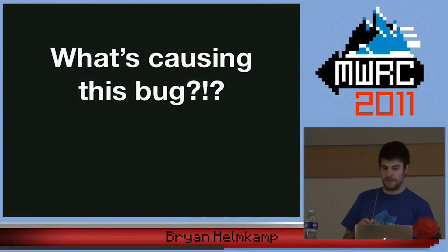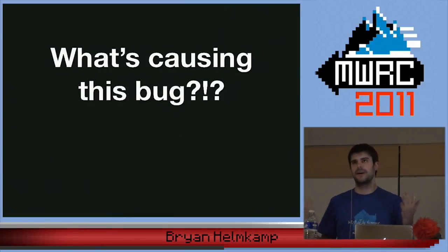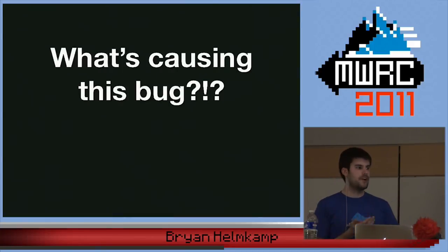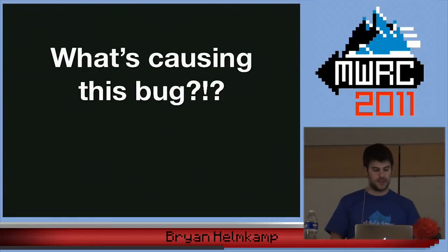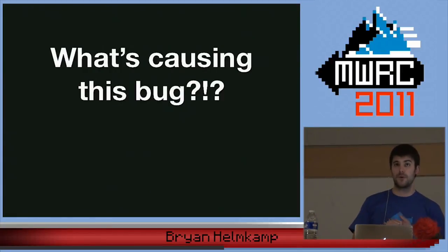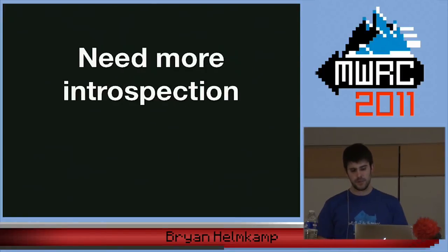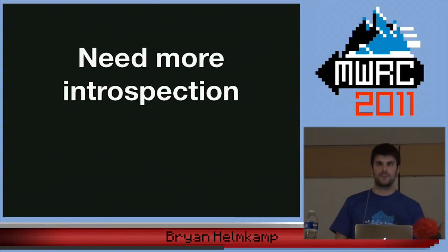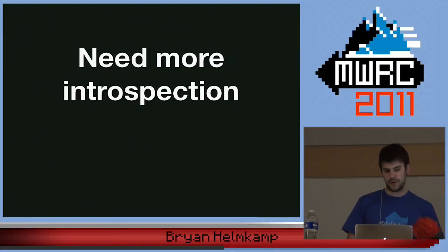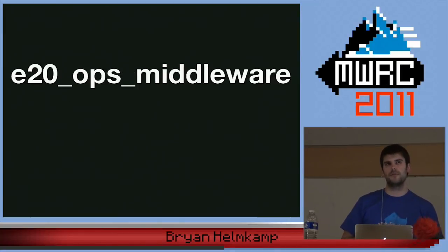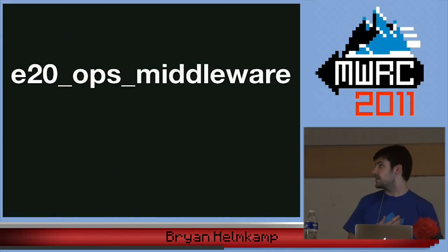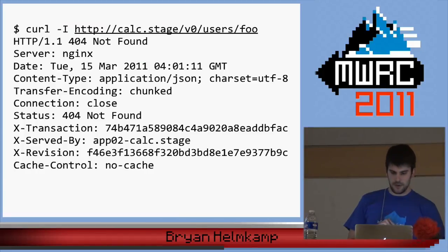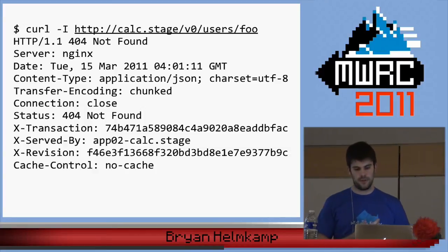The next problem: we've got a bug — something on screen isn't showing the right number. There are a lot of different places that issue could be coming from: different data stores, different code bases. We decided we needed more introspection into production. We created a gem called E2O Middleware — it's public on GitHub and RubyGems — and it does a few things we found very useful in maintaining our service-oriented architecture.